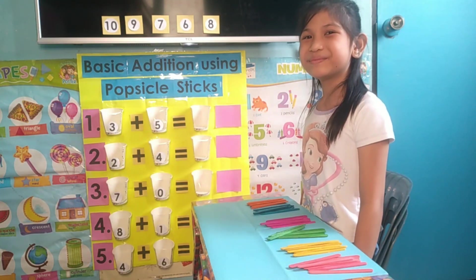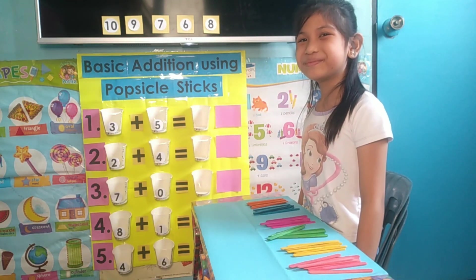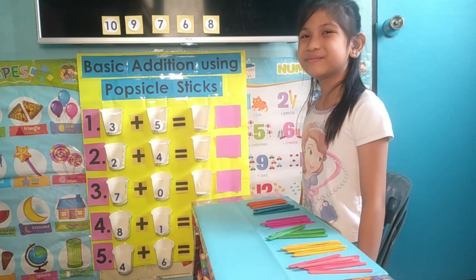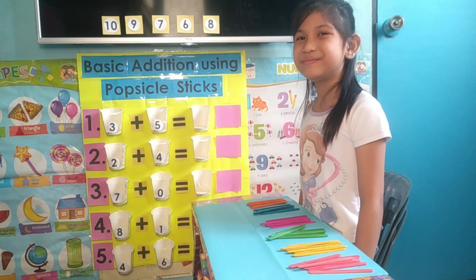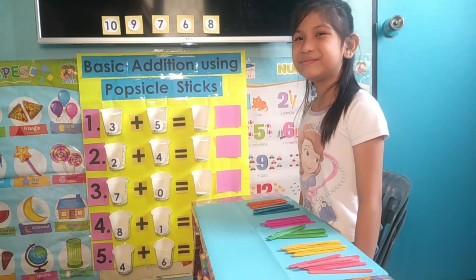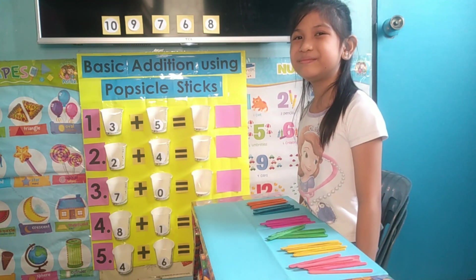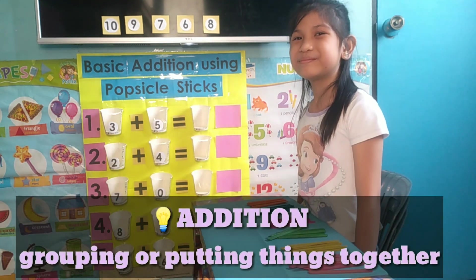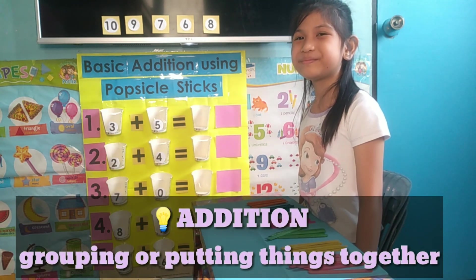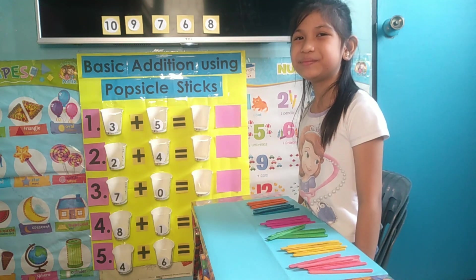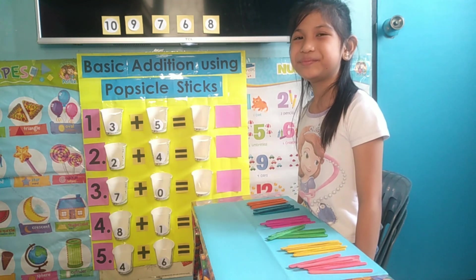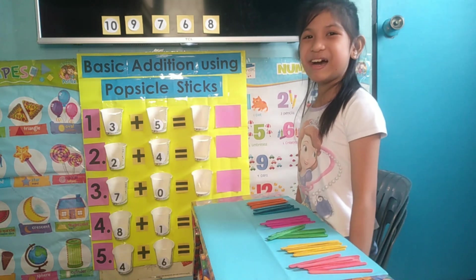Okay, so our materials for today are different colors of popsicle sticks and a chart. Laleh will identify the numbers inside each cup and then count popsicle sticks corresponding to that number. After getting the correct number of popsicle sticks, she will add them together to get the correct answer, then choose the correct number from the top of the chart. Are you ready, Laleh? Yeah! Okay, let's start!